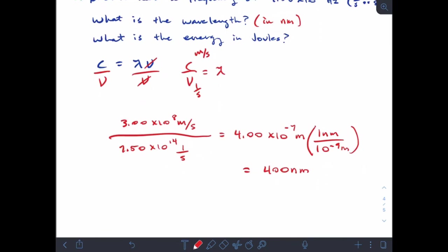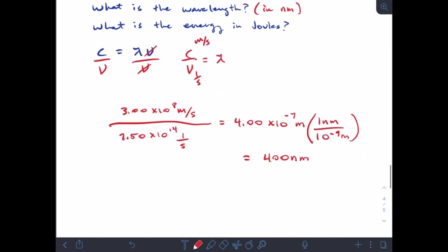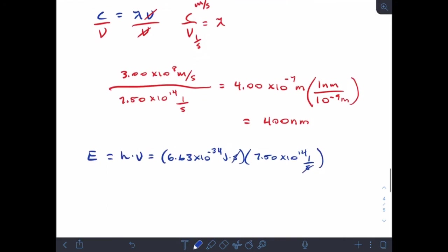Our second question: what is the energy in joules? Our energy equation was E equals h times ν. We already know what ν is, we're given that in the problem. h is a constant, Planck's constant, 6.63 times 10 to the minus 34 joules times seconds. And we have our frequency, which was 7.50 times 10 to the 14 inverse seconds. Our seconds will cancel out, so I get an answer in joules. Our final answer here will be 4.97 times 10 to the minus 19 joules.